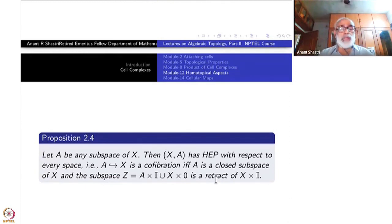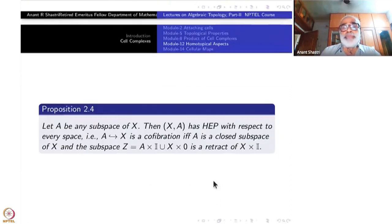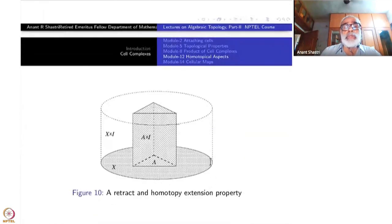There's no point in recalling this repeatedly - you should read it on your own. This was the picture here: X is the solid cylinder, and A is this triangle below. A×I is this prism, X×I is the solid cylinder. The cylinder can be slowly deformed, leaving the bottom portion unchanged, with this entire thing collapsing to this part.